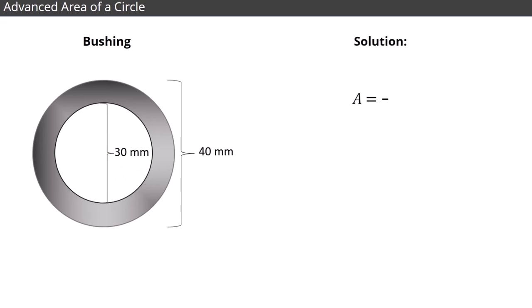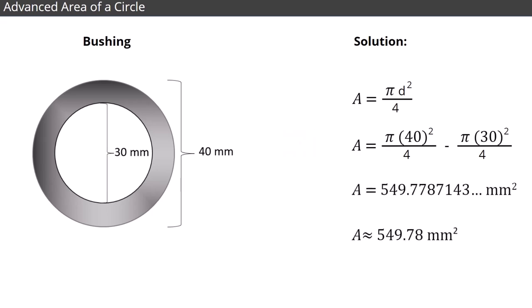To calculate the area, we need to subtract the area of the small circle from that of the large circle. Watch as we perform this calculation. We evaluate the formula using the pi button on our calculator to get the answer, and we round that to the hundredths place. Finally, we add the correct unit of measurement, which, in this case, is square millimeters.